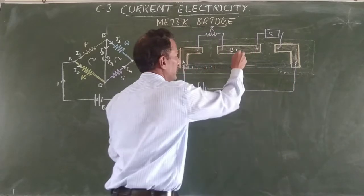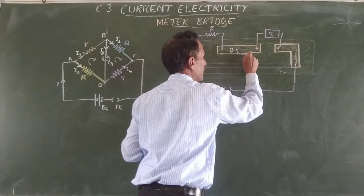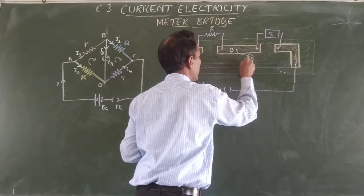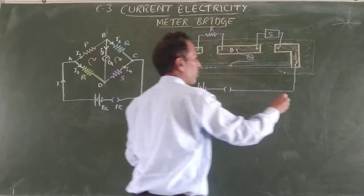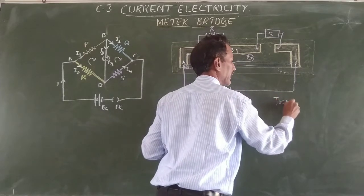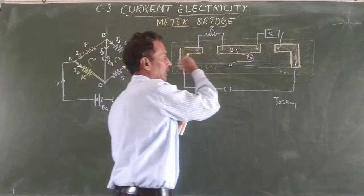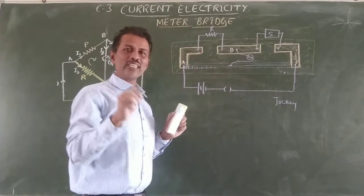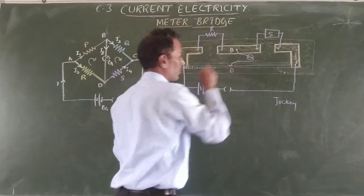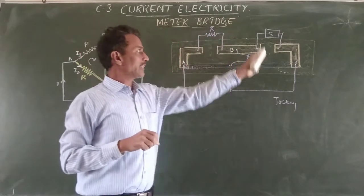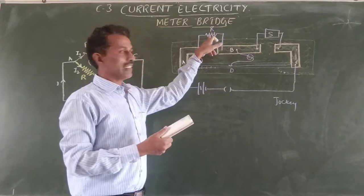Point B is connected to a jockey via a galvanometer G. This arrow mark is the jockey — J-O-C-K-E-Y — jockey means sliding contactor. So this is the circuit connection to find the unknown resistance of this wire.